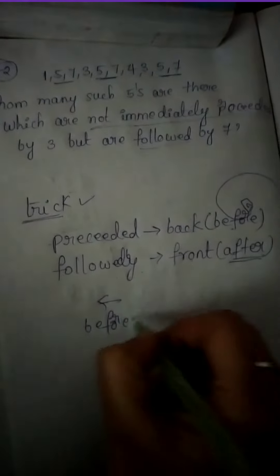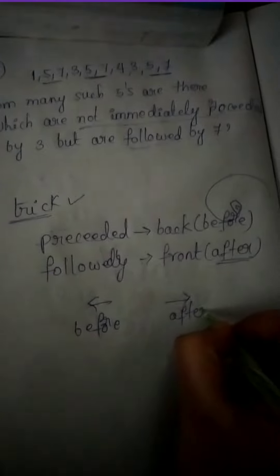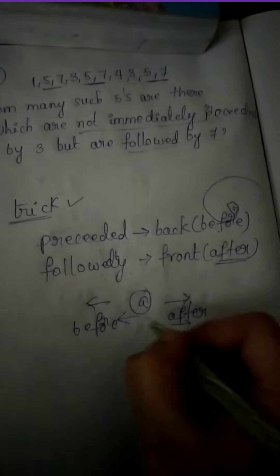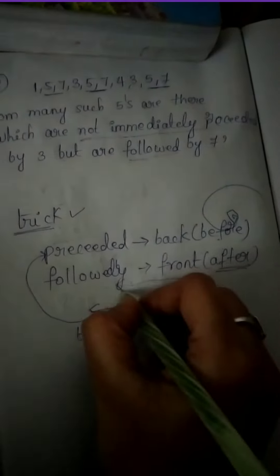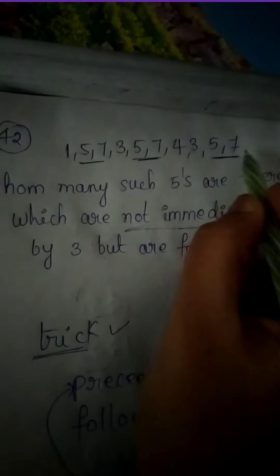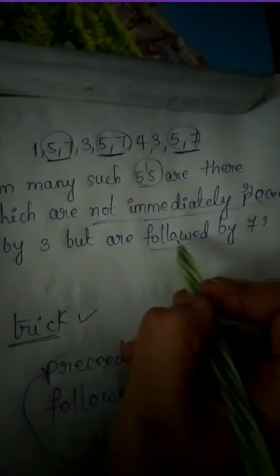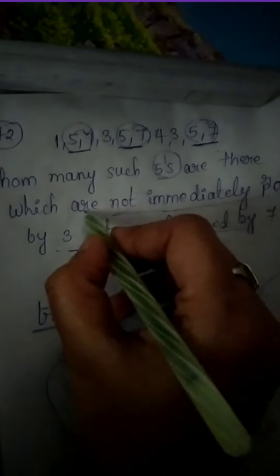As you know, how many files are there which are not immediately preceded by 3? So we have 3 cases: 3 and 5. Every 5 is followed by 7. Condition 3: not preceded by 3, that means 3 and 3, 5 is followed by 7.